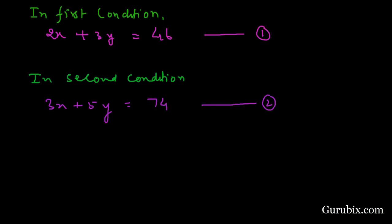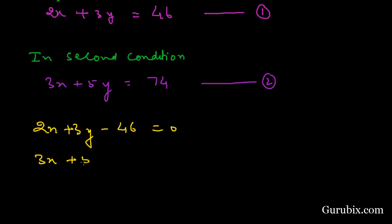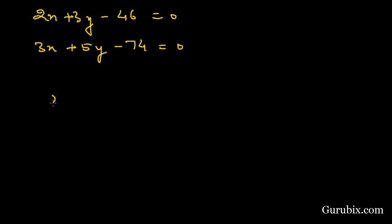Now we shall solve these two equations using the cross multiplication method. We write them in standard form: 2X + 3Y − 46 = 0, and 3X + 5Y − 74 = 0.